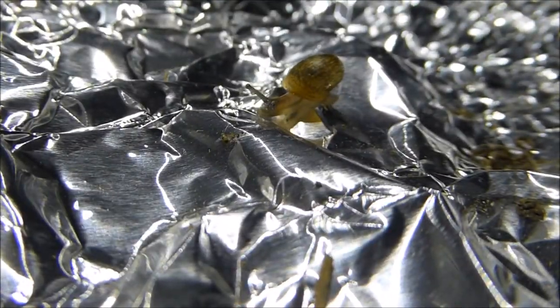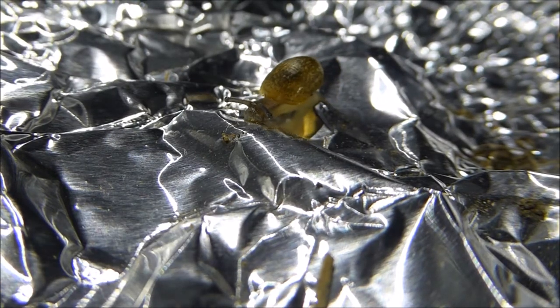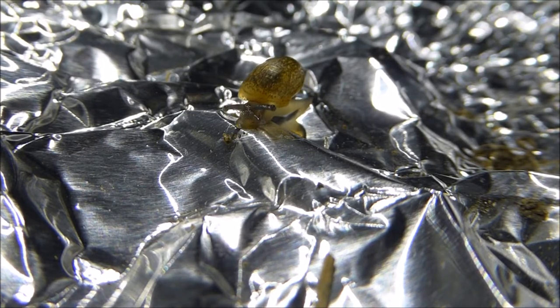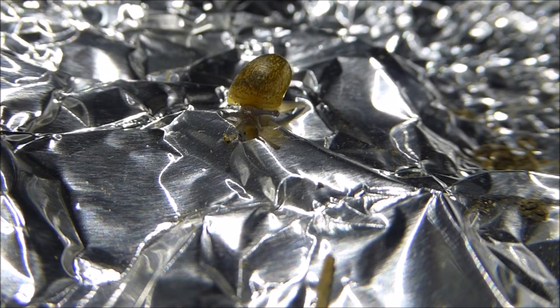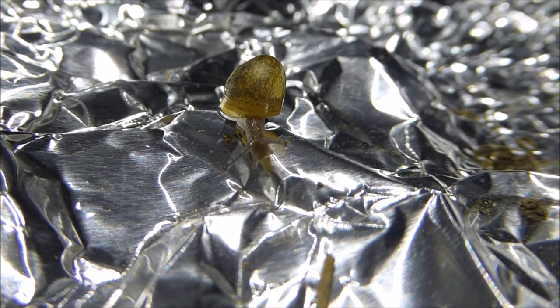When they mate, land snails circle around one another. Think full body French kiss, but with more mucus. As they do this, they're looking for opportunities to impale each other with their love darts. I wish this was a metaphor, but it's not.